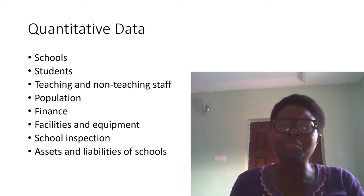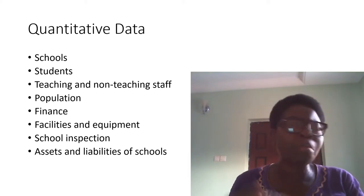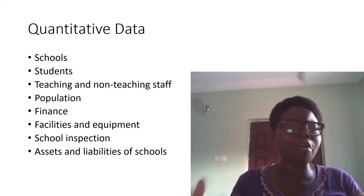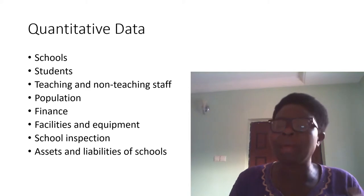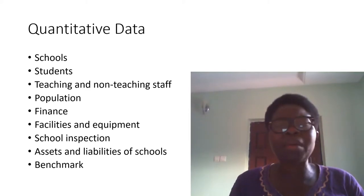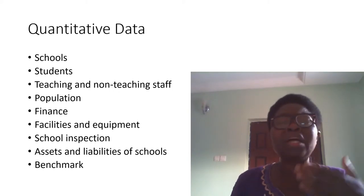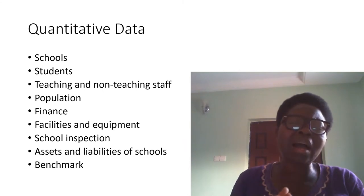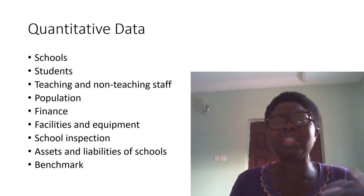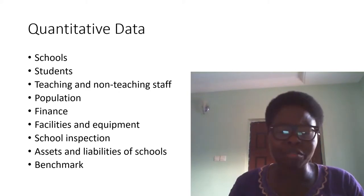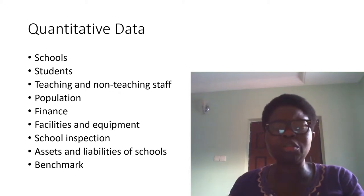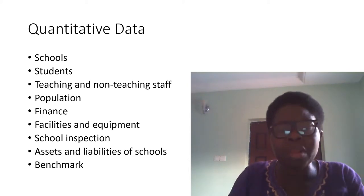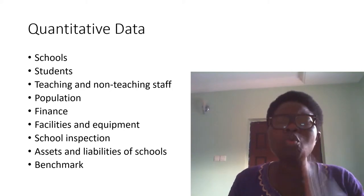For example, paying salaries to staff is part of your liabilities, but an existing building owned by the school is an asset. You need to know where your assets and liabilities lie. Now, the benchmark — as mentioned in the last video — gives us a guide on what we need to do. In Nigeria, we have the quality assurance commission from primary to higher level. The benchmark is the minimum standard required, though you can exceed it. These are the quantitative data needed in educational planning.